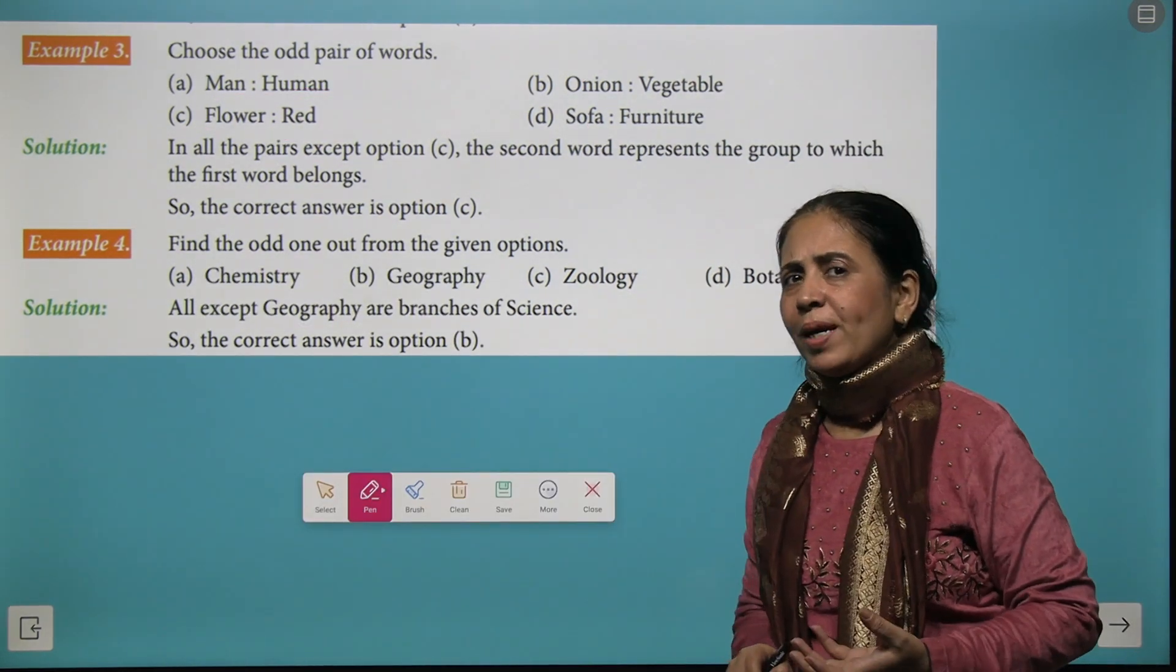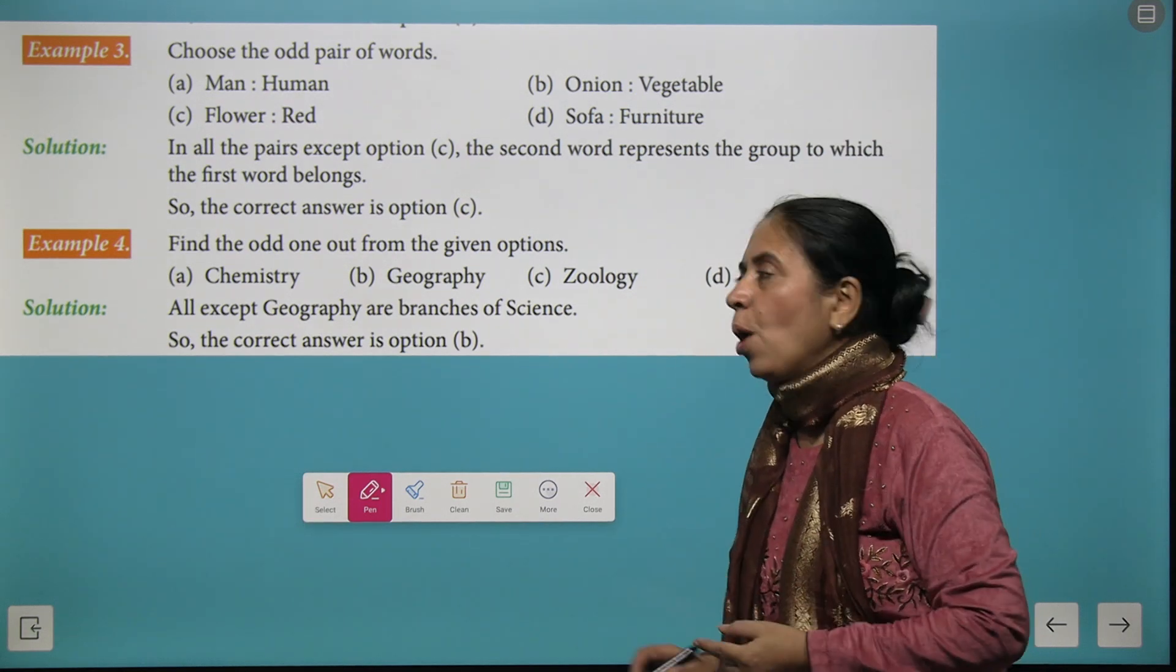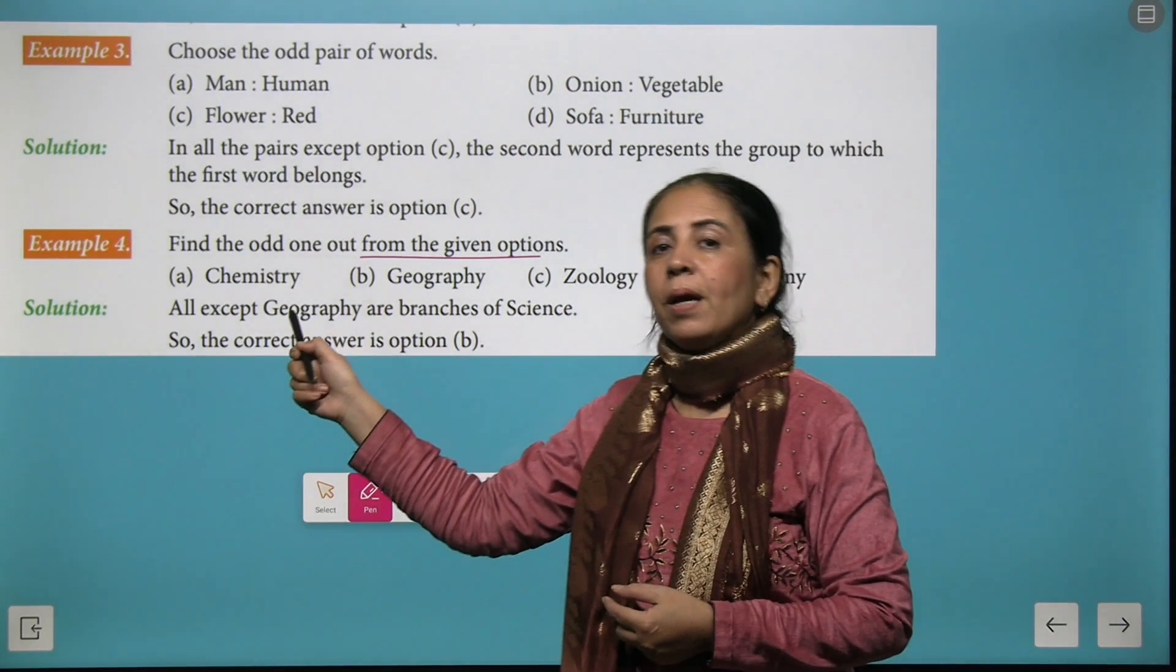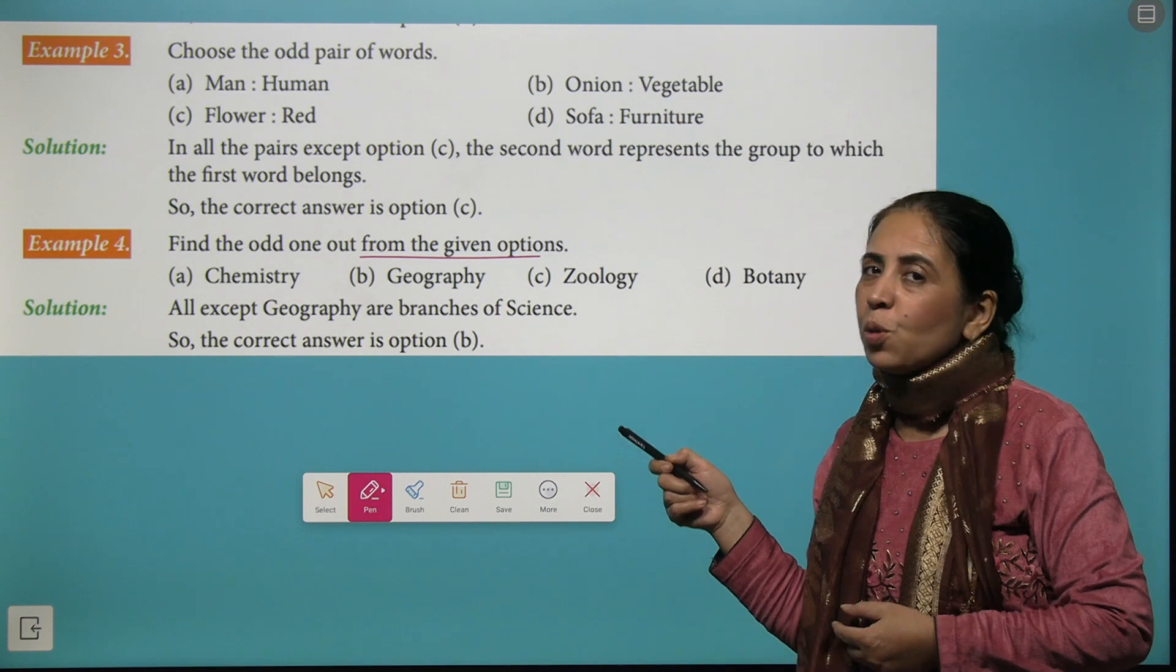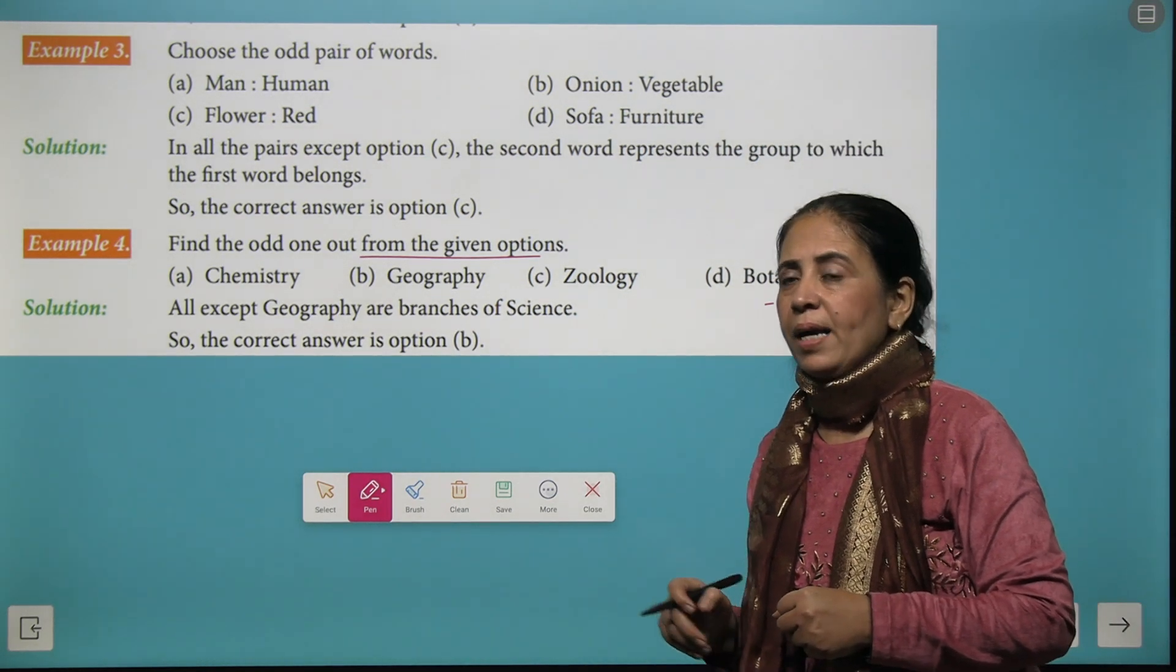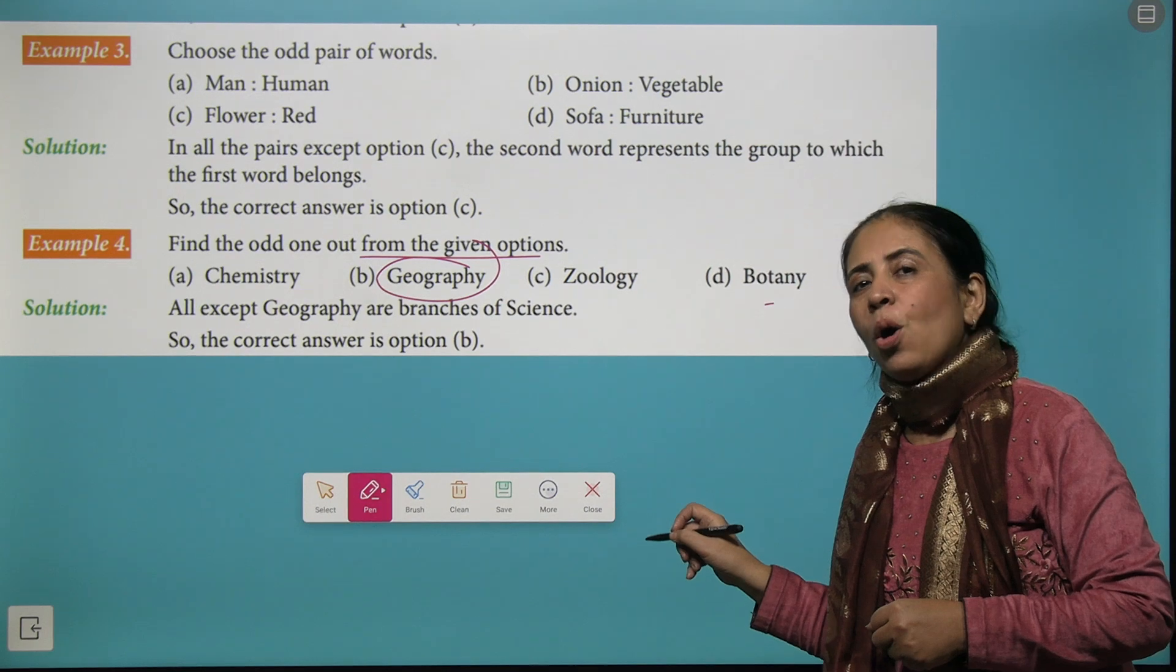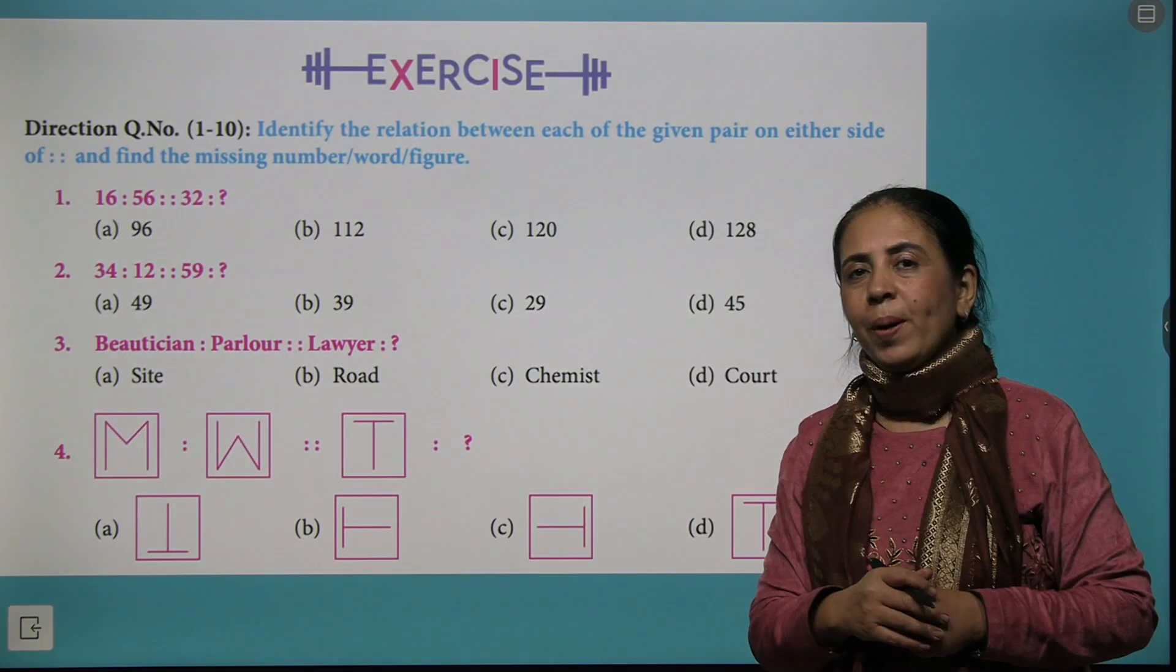Now let's come to another example. Here you have to find the odd one out from the given option. Chemistry is the stream of science. Geography is a stream of social studies. Then geology and botany they are again branches of science. So we find geography as the odd one out. Did you understand how we attempt the questions?